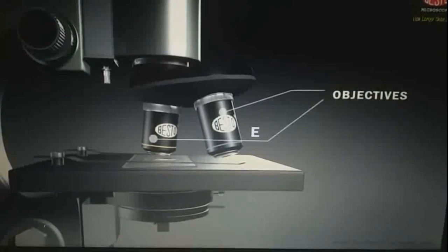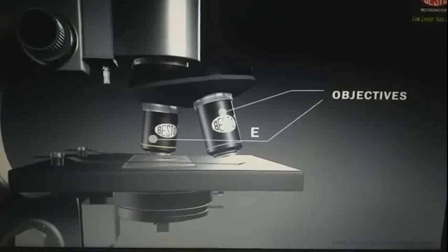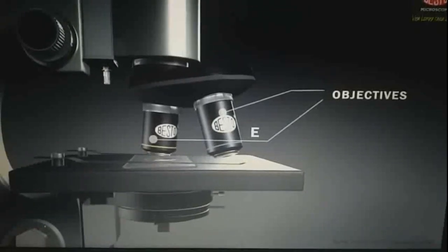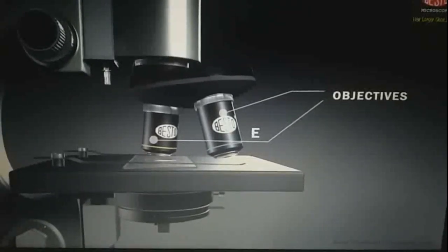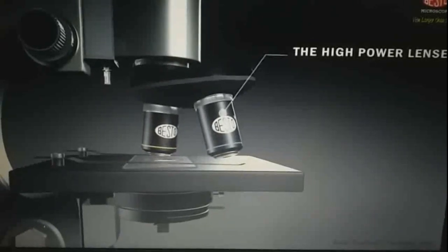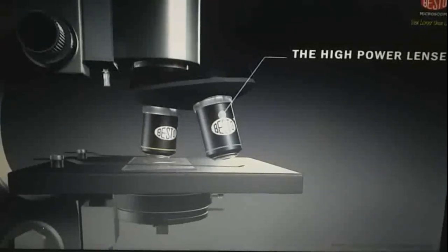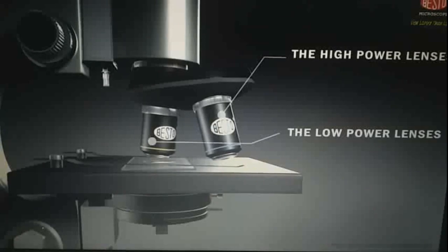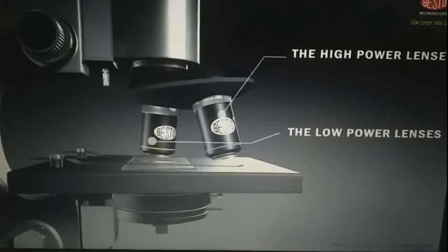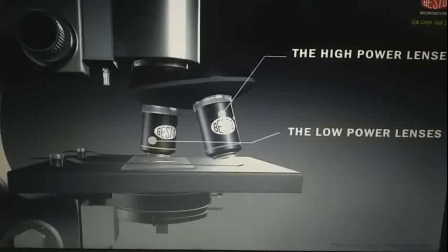E, objectives. These are the parts at the bottom of the body tube closest to the sample you are examining. Each objective has lens and a tube-like holder. The longer mount holds the stronger lenses or the high power lenses. The shorter hold the weaker lenses or low power lenses.